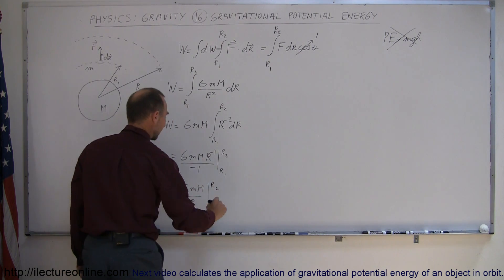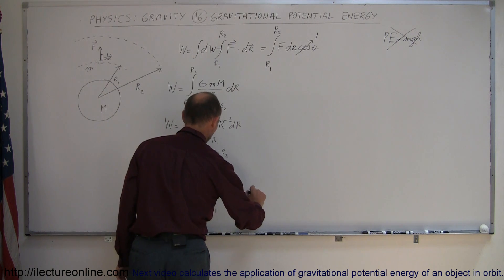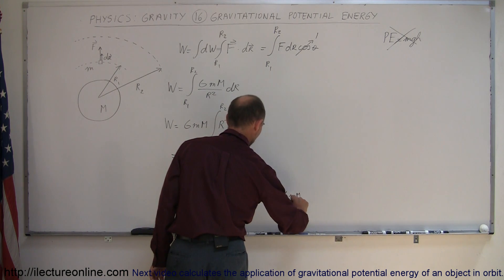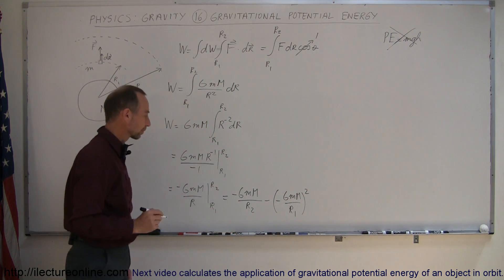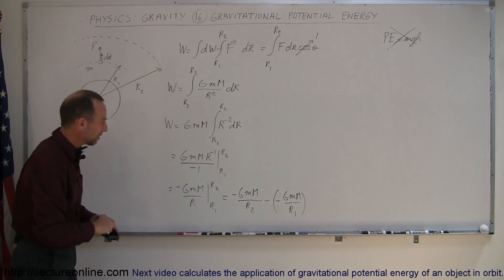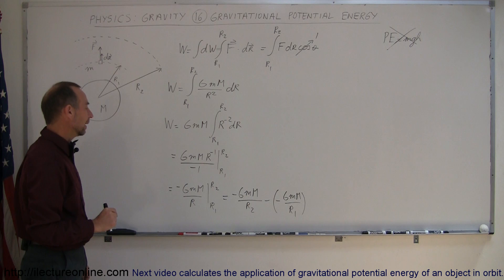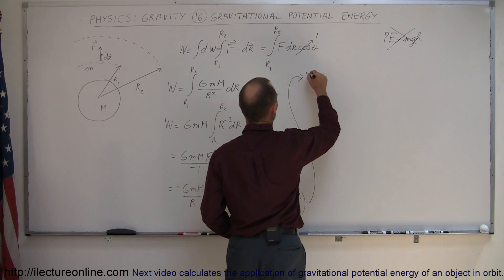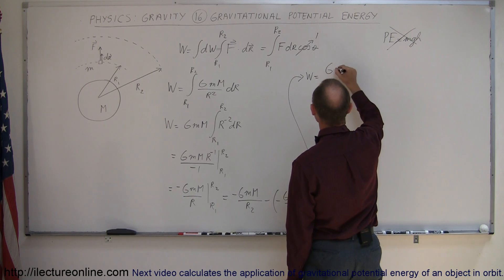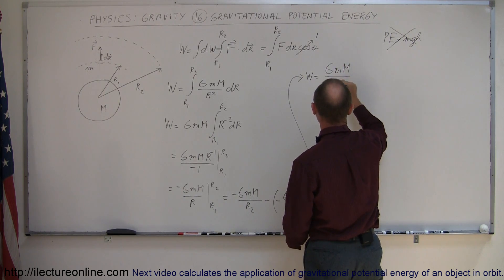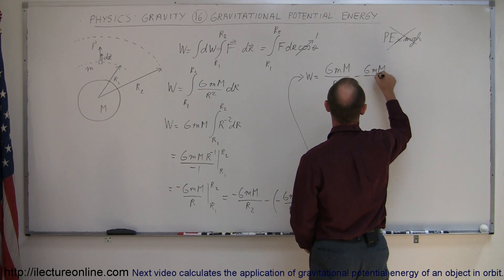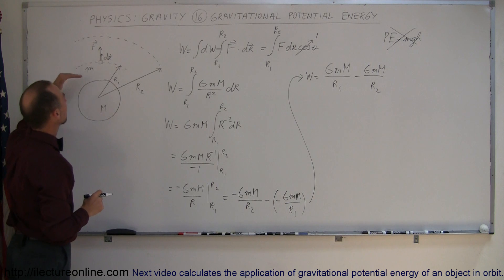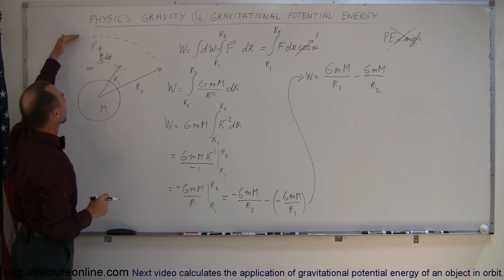Rearranging, that equals negative G·m·M over R, evaluated from r1 to r2. Plugging in the limits gives: negative G·m·M over r2 minus negative G·m·M over r1. Since one is positive and one is negative, the work done equals G·m·M over r1 minus G·m·M over r2. This looks like the potential energy at one location minus the potential energy at the other location.